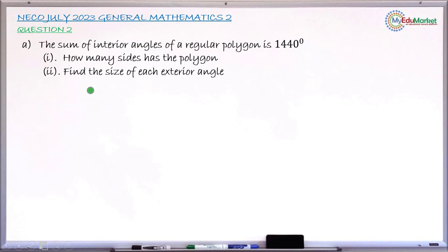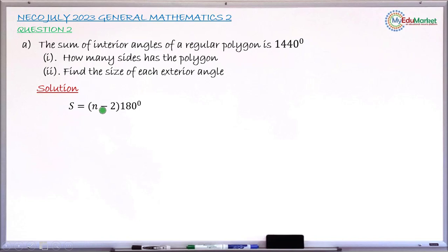For the solution, we first attempt Roman 1. We write the formula for finding the sum of interior angles, which is given as: S equals (N minus 2) multiplied by 180 degrees. This is the formula we use to find the sum of interior angles in any polygon.